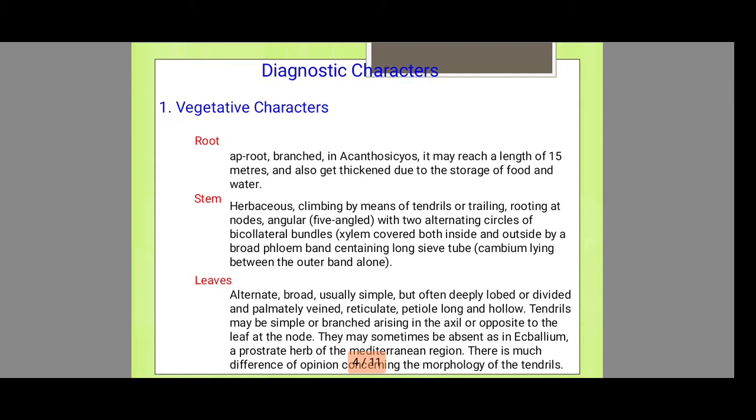The stem is herbaceous, climbing by means of tendrils and trailing, rooting at nodes, angular with two alternating circles of bicollateral bundles.